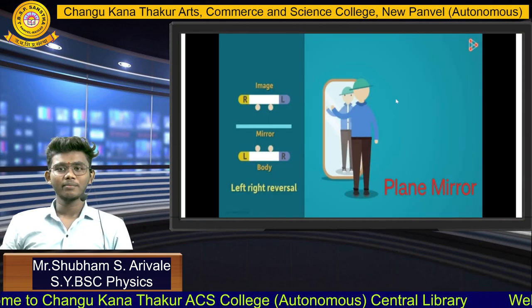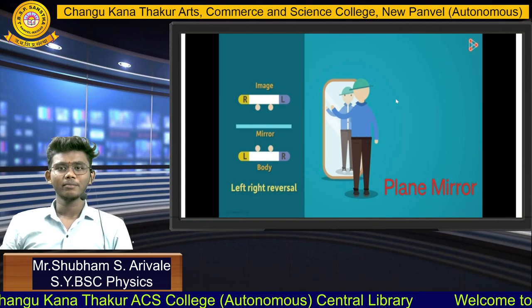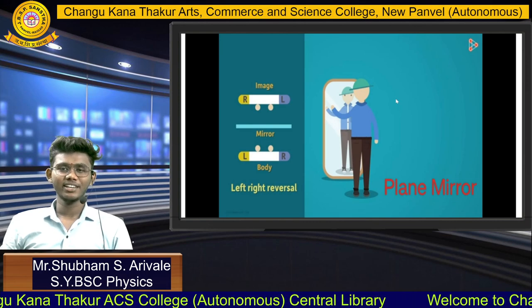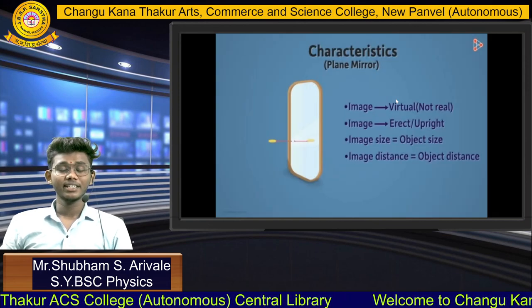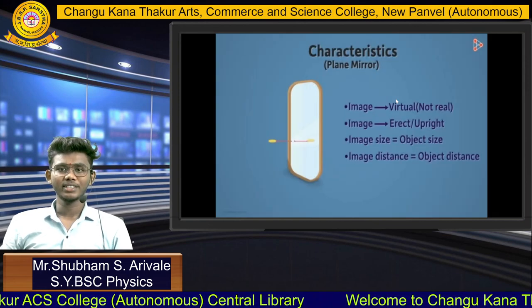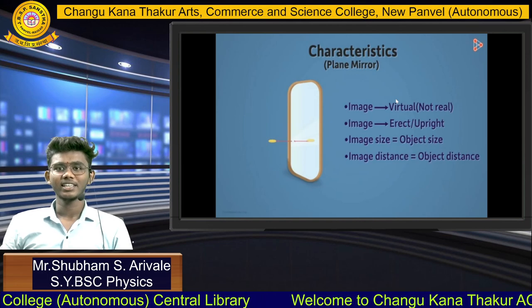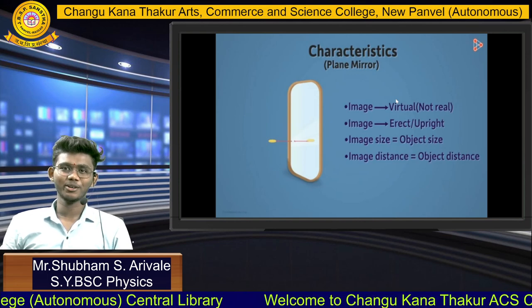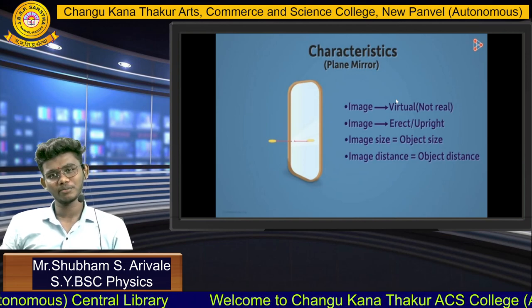Mirror has two types: Plane Mirror and Spherical Mirror. Plane Mirror is a left-right reversible mirror. Characteristics of Plane Mirror: the image is virtual and erect, image size is equal to object size, and image distance is equal to object distance.